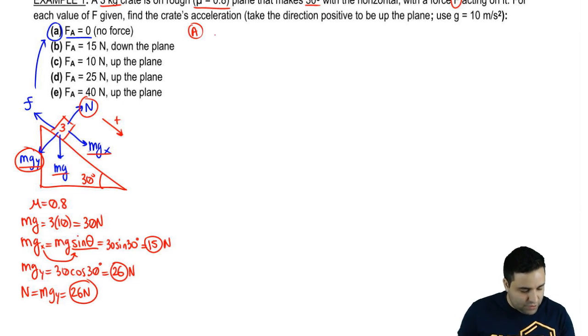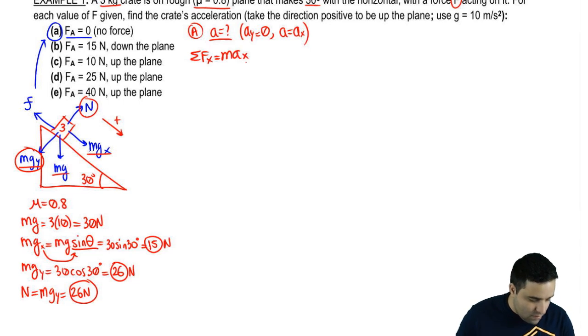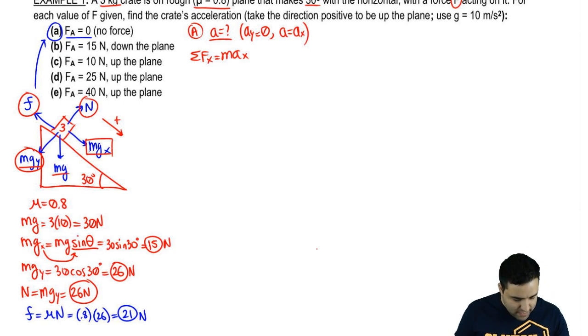So now let's calculate the acceleration in this particular situation here. To find acceleration on a force problem, we're going to use F equals ma. Remember, acceleration means acceleration in the x-axis because there is no acceleration in the y-axis in these incline plane problems. Sum of all forces in the x-axis equals max. And the only two forces I have are mgx and friction. Let's actually calculate friction real quick. I forgot to do that. Friction is mu normal. Mu is 0.8 and normal is 26. And if you do this, it's roughly 21. It's really close to 21 newtons.